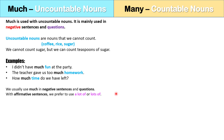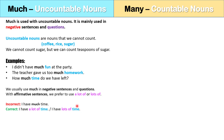We usually use much in negative sentences and questions. With affirmative sentences, we prefer to use a lot of or lots of. So for example, if you said I have much time, it doesn't sound correct — that is not natural. We would say I have a lot of time, or I have lots of time.